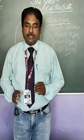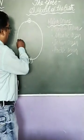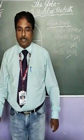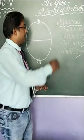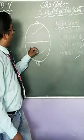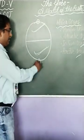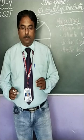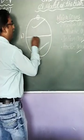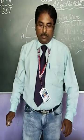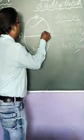Halfway between the two poles is another imaginary line called the equator. This equator divides the earth into two halves — one is the Northern Hemisphere and the other is the Southern Hemisphere. A line drawn in the center of the globe from West to East is also called the equator, and it is the biggest circle around the globe.